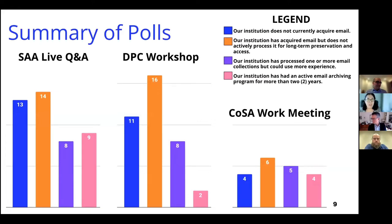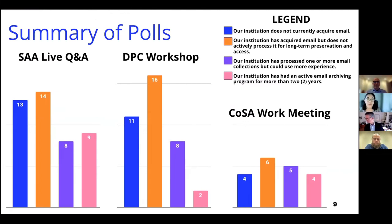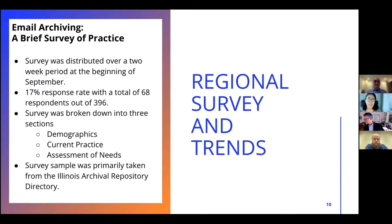Our first poll was at the Society of American Archivists Archives Records 2021 conference in June. A large majority of the audience indicated they do not currently archive email, or that they've acquired email but are not actively processing it for long-term preservation. This poll is a great way to demonstrate the need to bring the email archiving community forward and how the EABCC projects are working together to bridge existing gaps. We also did the same poll at the Council of State Archivists work meeting, and at the email archiving workshop provided by the Digital Preservation Coalition, whose audience was primarily internationally based.